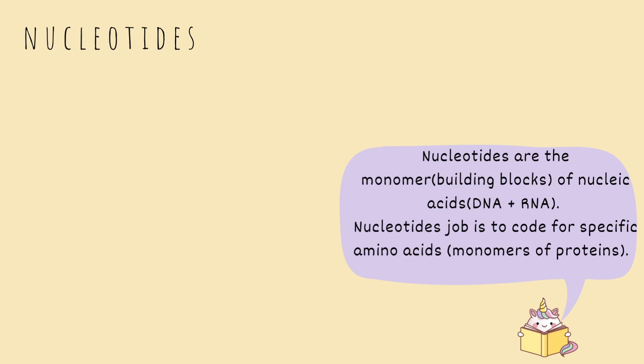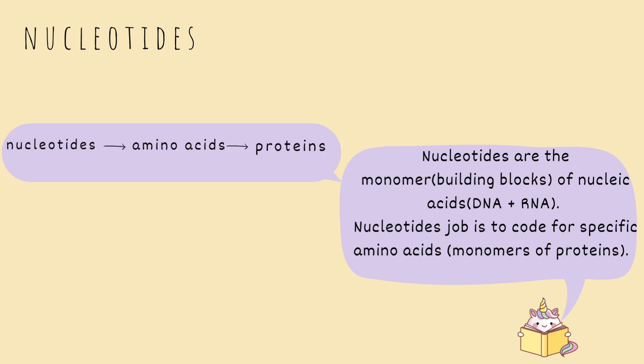Nucleotides are the monomers of nucleic acids — the nucleic acids referring to DNA and RNA. Nucleotides' job is to code for specific amino acids, and remember, amino acids are the monomer of proteins. In other words, amino acids are what proteins are made of. Nucleotides make the amino acids, and amino acids make the proteins.